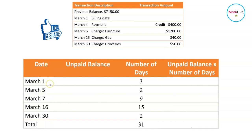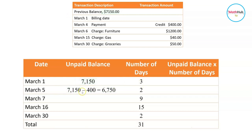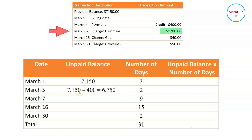The table shows the beginning date for each unpaid balance. Beginning March 1st, this is the previous balance running for 3 days, with an unpaid balance of 7,150. On March 4th, a payment of $400 was made, so the unpaid balance is 7,150 minus 400, which equals 6,750. Beginning March 5th, that unpaid balance of 6,750 runs for 2 days. On March 6th, a charge of $1,200 was added to the account, so beginning March 7th the new unpaid balance is 7,950, which runs for 9 days.